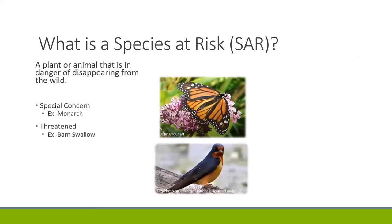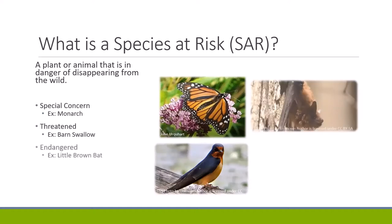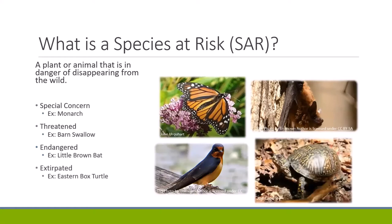A threatened species, such as the barn swallow, is likely to become endangered if nothing is done to reverse the factors leading to its extirpation or extinction. The little brown bat is an endangered species — one facing imminent extirpation or extinction. An extirpated species, such as the eastern box turtle, no longer exists in the wild in Canada but is still living in other areas of the world.